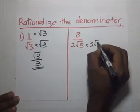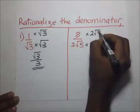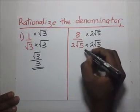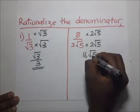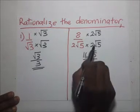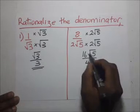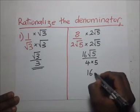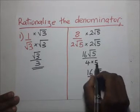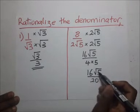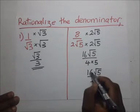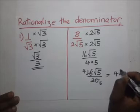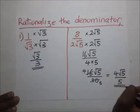Here we have a one-term expression in the denominator, so we multiply by 2 root 5 over 2 root 5. The numerator becomes 8 times 2, which is 16 root 5. The denominator is 2 times 2 which is 4, times root 5 times root 5 which is 5, giving 4 times 5 equals 20. So we have 16 root 5 over 20, which simplifies by dividing by 4 to give 4 root 5 over 5.